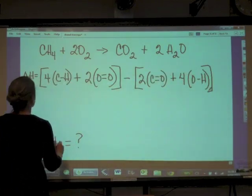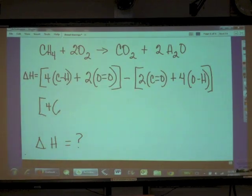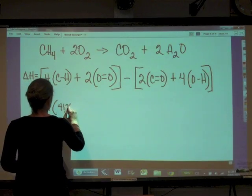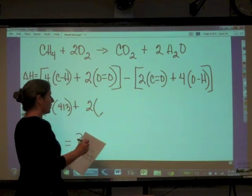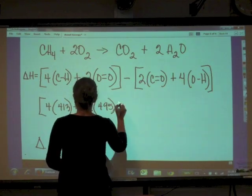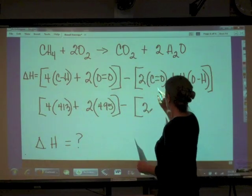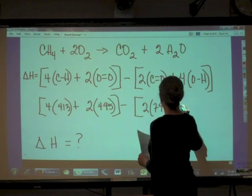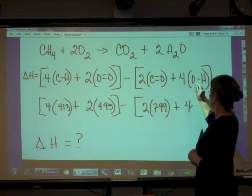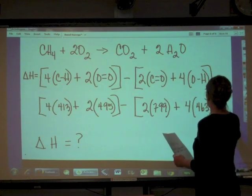So then last but not least, we have to go to a table that will give us these values. So this is going to end up being four times, let's see, the bond energy for a carbon hydrogen bond is 413 kilojoules per mole, plus two times the bond energy for an oxygen to oxygen double bond is 495 kilojoules per mole, minus two times a carbon oxygen double bond is 799 kilojoules per mole, plus four times an oxygen hydrogen bond is 463 kilojoules per mole.